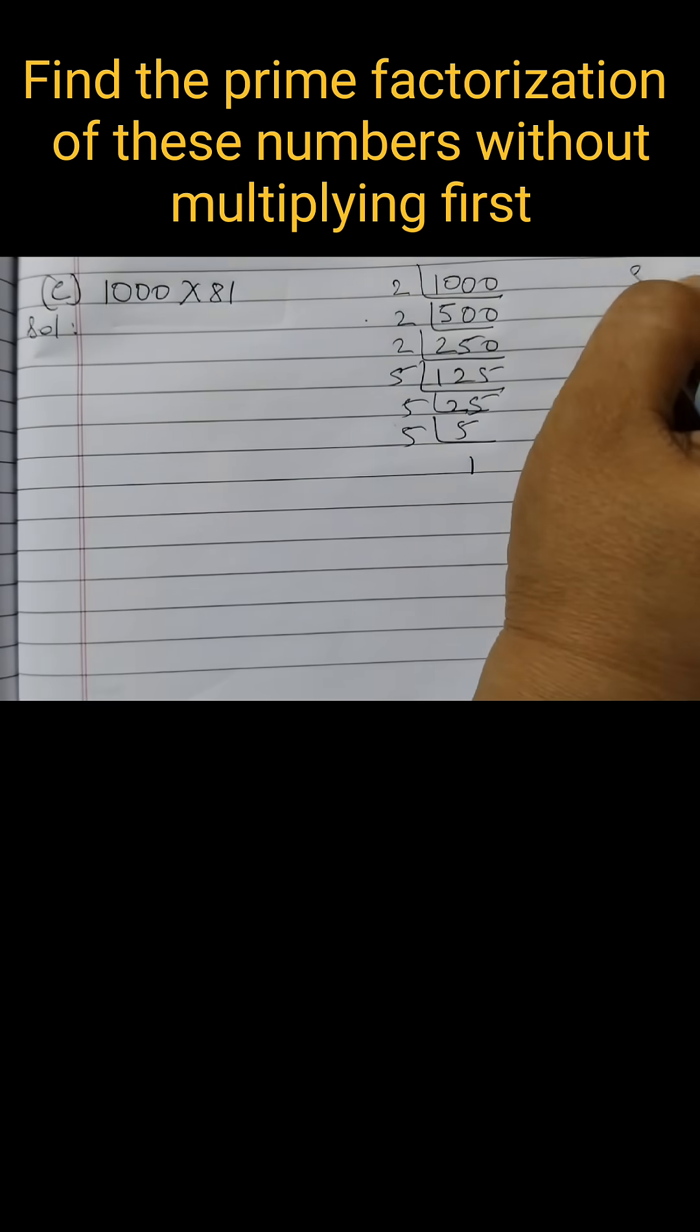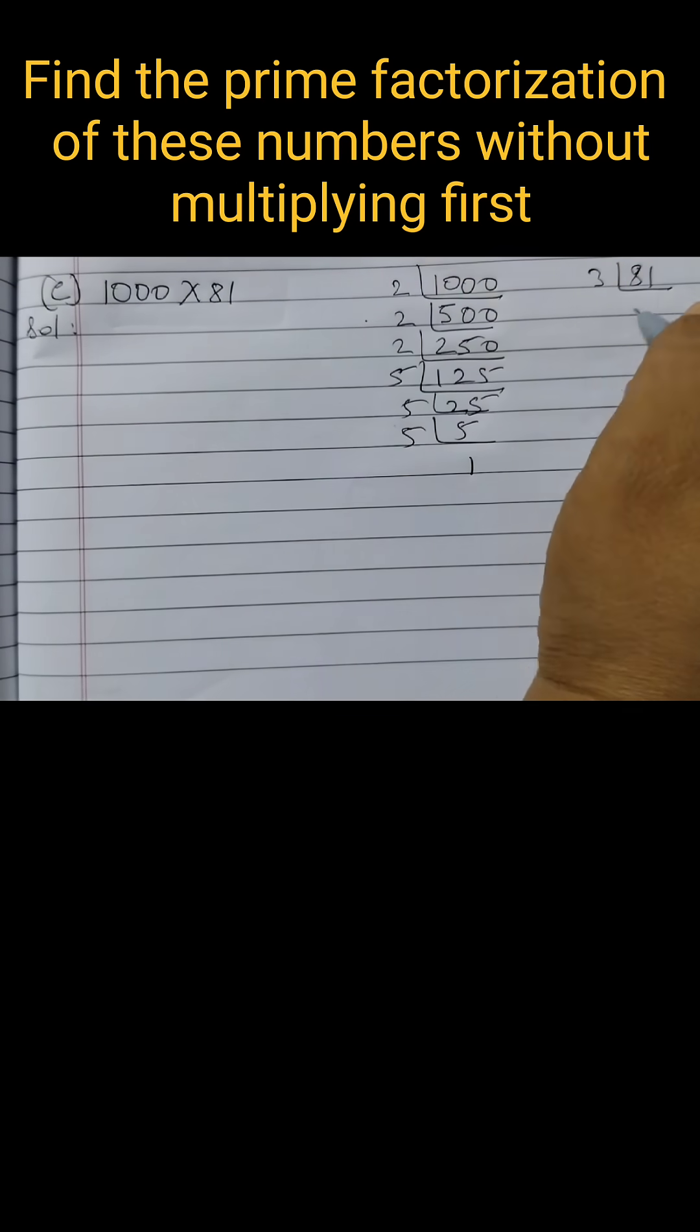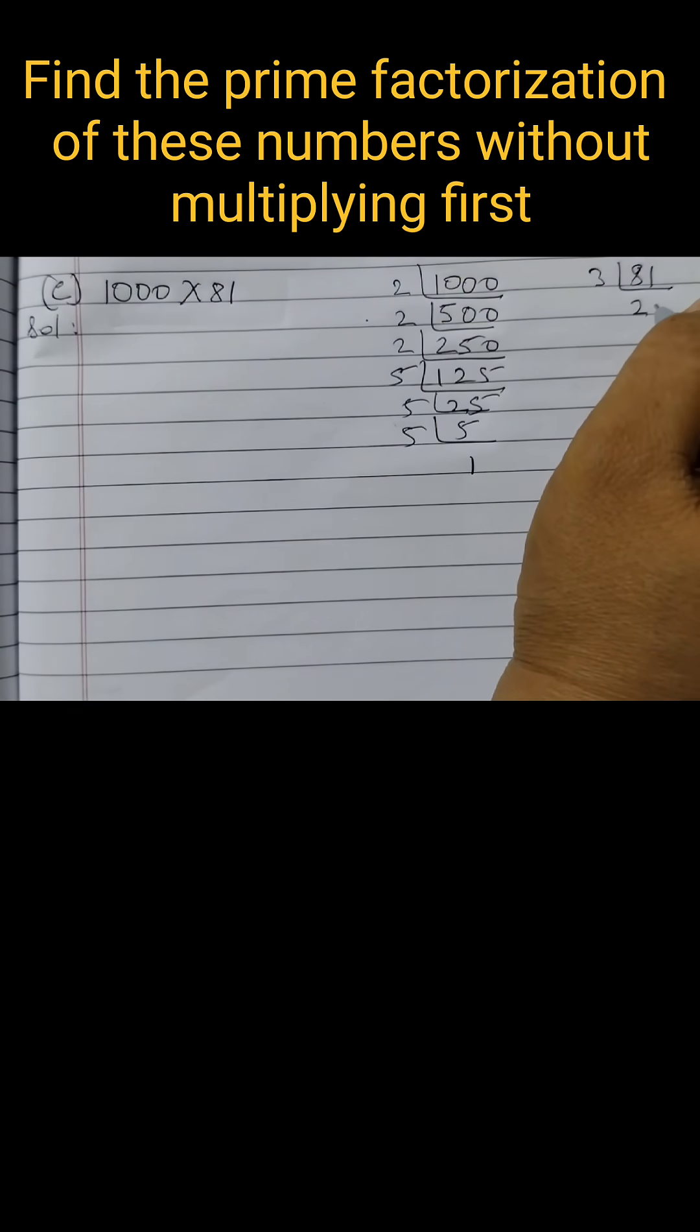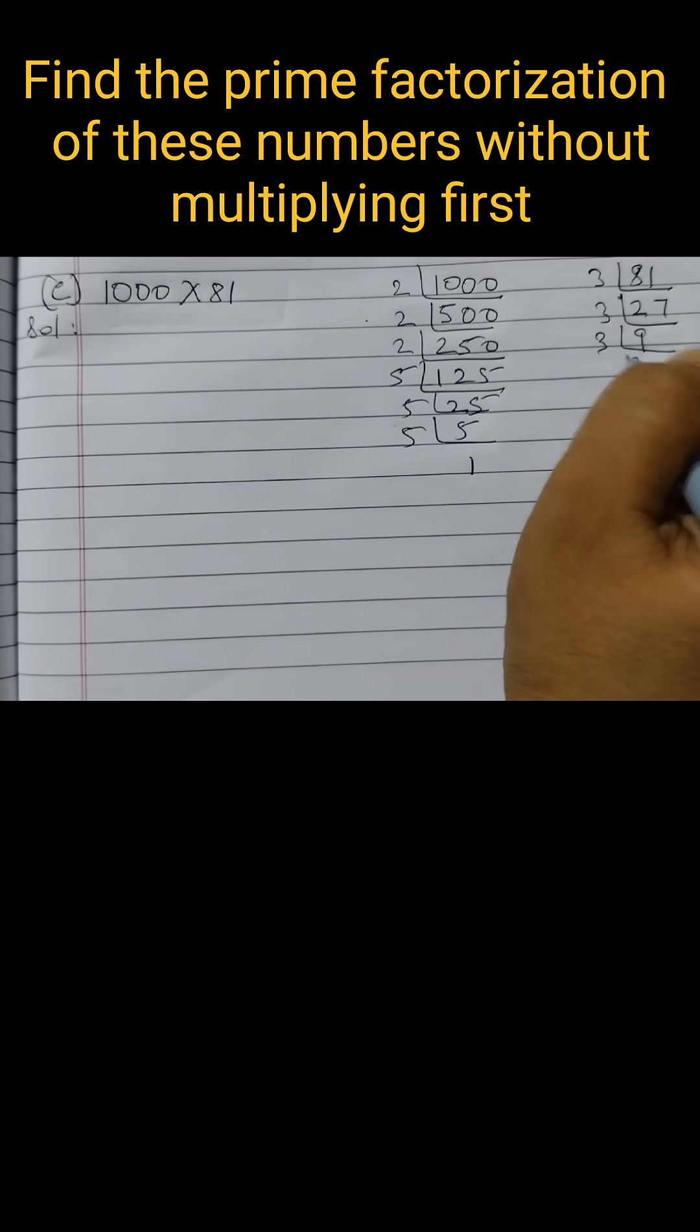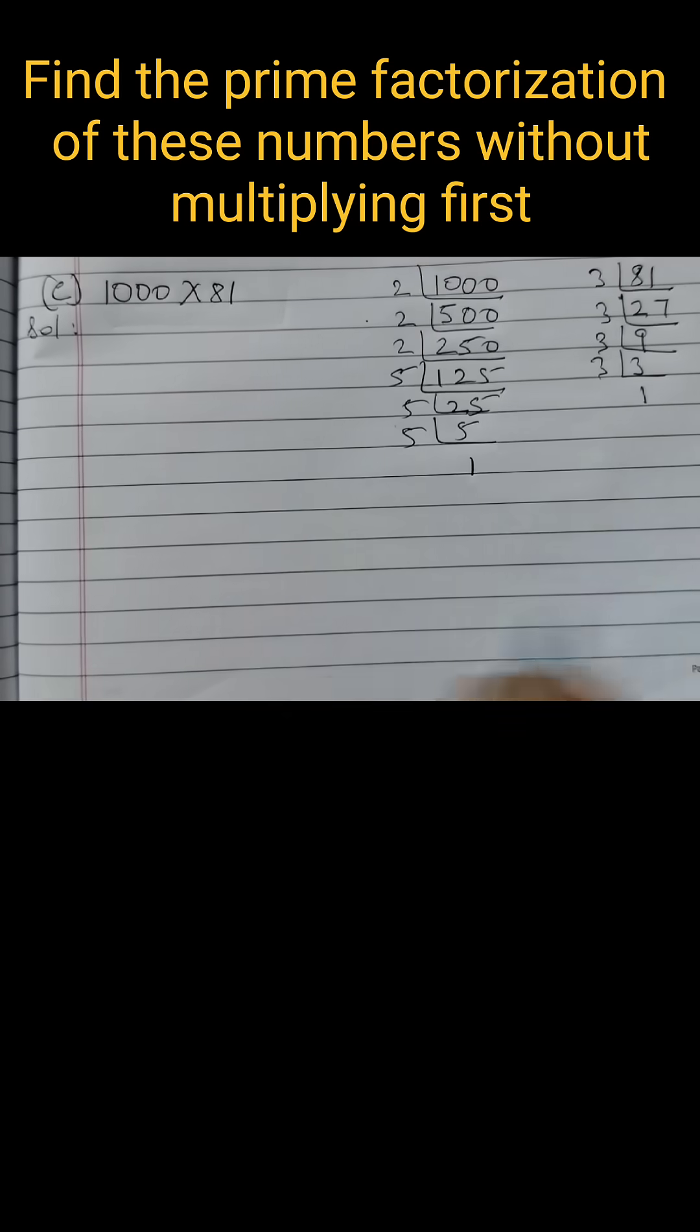Now we will do 81. Start with 3. 3, 27. 3, 9. 3, 3. 3, 1.